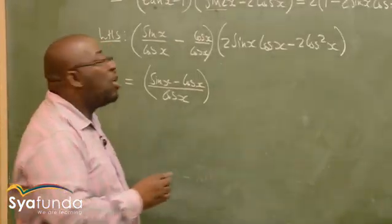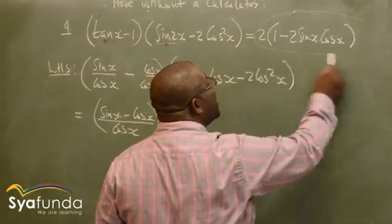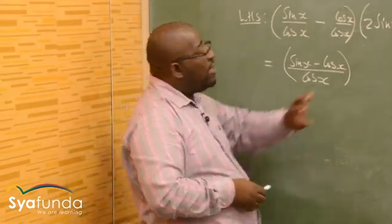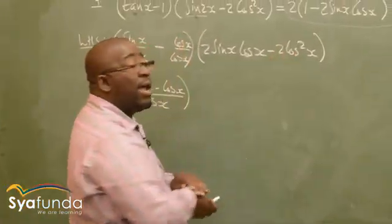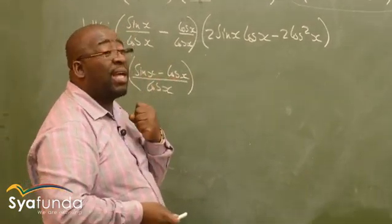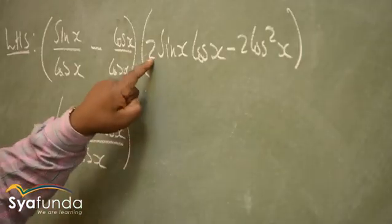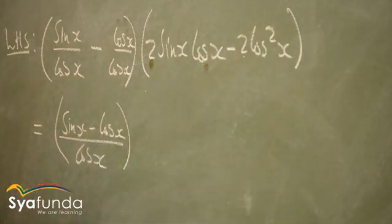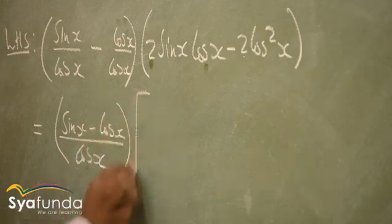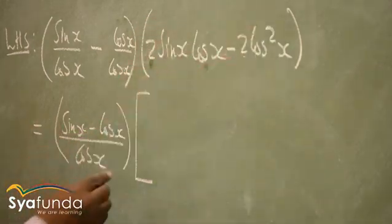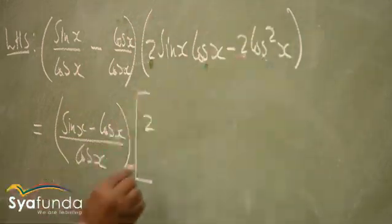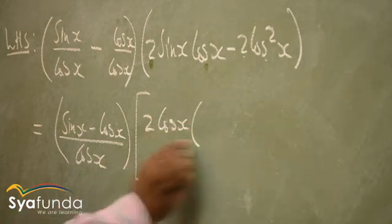Whatever I do, I don't forget what I want to get. I can see the common factor here. I open my mathematical eye when I do these problems. I can see cos x in this term and cos x in this term. What is the common factor between these two terms? It is 2, and there's also cos x — cos x is common in both.